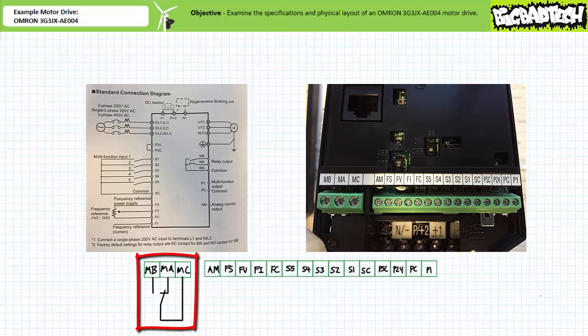The small row of three terminals on the left belong to an output relay, respectively left to right: MB, MA, and MC.